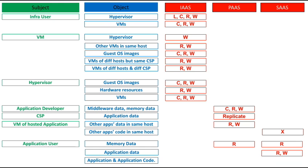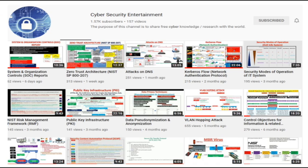The application user can also read and write application data — for example, you can read your own email and delete it as well. In the SaaS model, the application user can execute other applications; for example, if an email application has a link to another application inside the same email software, the cloud user in SaaS can execute that application as well. That was all — please stay connected, thank you.